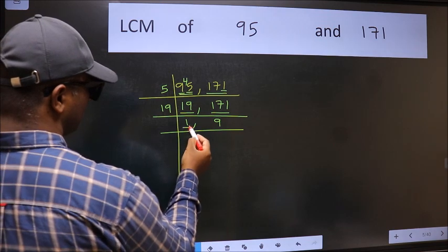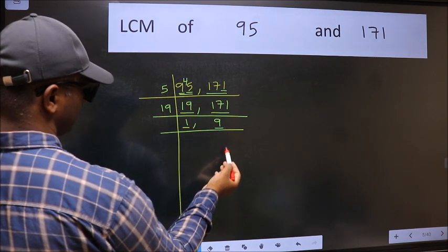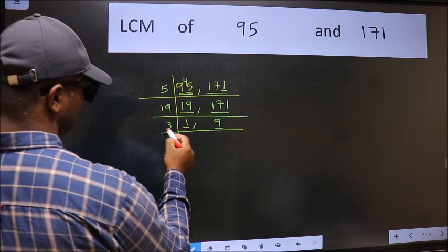Now we got 1 here, so focus on the next number 9. 9 is 3 times 3.